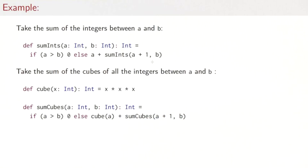Now that we've done that, let's vary the problem a little bit and consider taking the sum of the cubes of all integers between a and b. Here's the cube function: take an x, return x times x times x. Sum cubes then would be the same as sum ints. But where we used an a before, now we return cube of a. Otherwise, it's the same thing as sum ints, recursive call to sum cubes in this case.